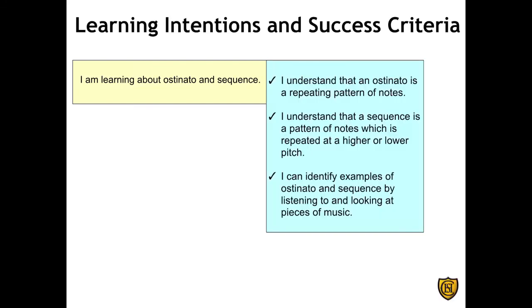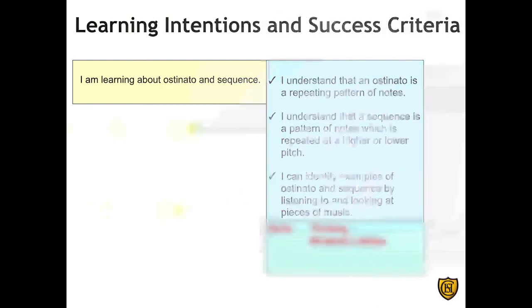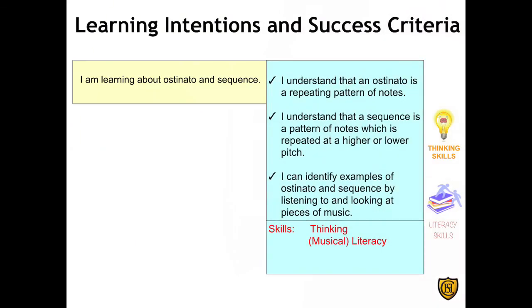To recap what we've learned so far, an ostinato is a repeating pattern of notes, and a sequence is a pattern of notes which is repeated at a higher or lower pitch. In the task below, you'll be using your thinking skills and musical literacy skills to identify examples of ostinato and sequence by listening to and looking at pieces of music.